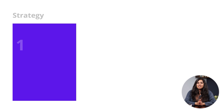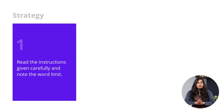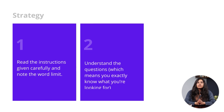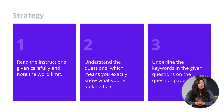We're going to look at strategies that you can use to attempt this question type. The first step is to read the instructions and make a note of the word limit — if it helps, you can underline that part of the instruction. Next, go to the question and understand what's being asked of you. Then go ahead and underline the keywords in the given questions and match them to the ones in the passage to help you find the answers faster.